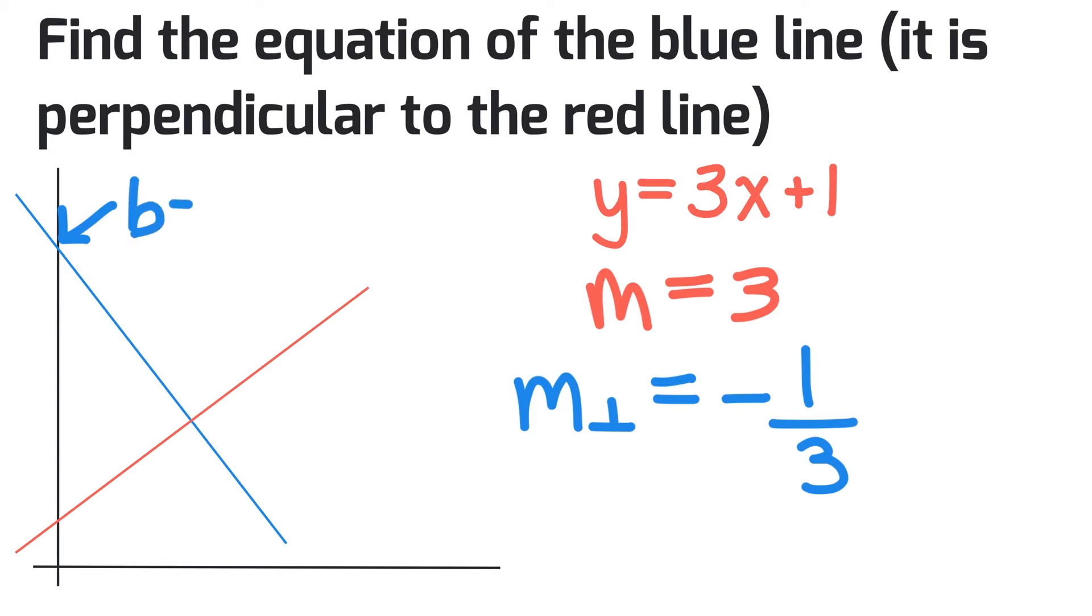Now we take the perpendicular slope and the y-intercept to write out the equation of the blue line: y = -1/3x + 7.